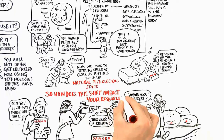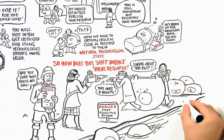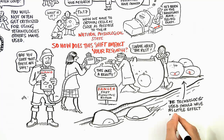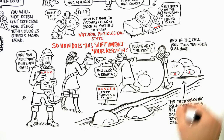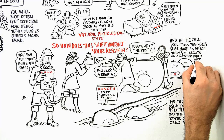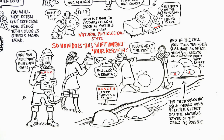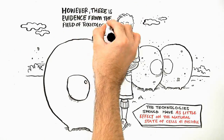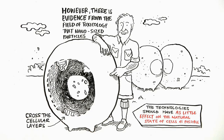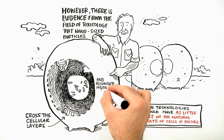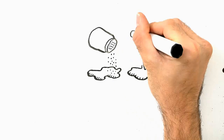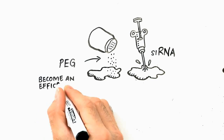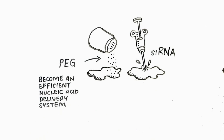So how does this shift impact your research? The technologies you use should have as little effect on the natural state of the cells as possible. And if the cell isolation technology does have an effect, then you need to understand what that effect is. However, there is evidence from the field of toxicology that nano-sized particles cross cellular layers and actually accumulate inside intracellular compartments, rather than being easily biodegraded. Indeed, this has been seen as a benefit when nanoparticles are combined with siRNA to become an efficient nucleic acid delivery system and a potential therapeutic.